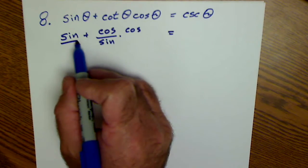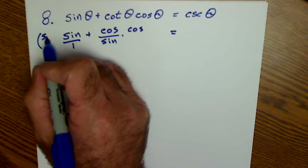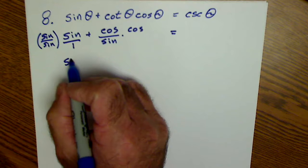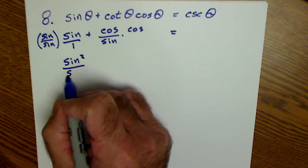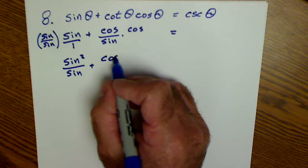Now I have two fractions being added together. I need a common denominator. I'm going to multiply this by sine over sine. So my numerator, that's going to give me sine squared all over sine plus cosine squared over sine.